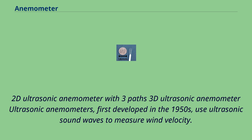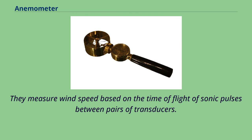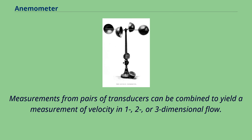2D ultrasonic anemometer with three pads. 3D ultrasonic anemometer. Ultrasonic anemometers, first developed in the 1950s, use ultrasonic sound waves to measure wind velocity. They measure wind speed based on the time of flight of sonic pulses between pairs of transducers. Measurements from pairs of transducers can be combined to yield a measurement of velocity in one, two, or three-dimensional flow.